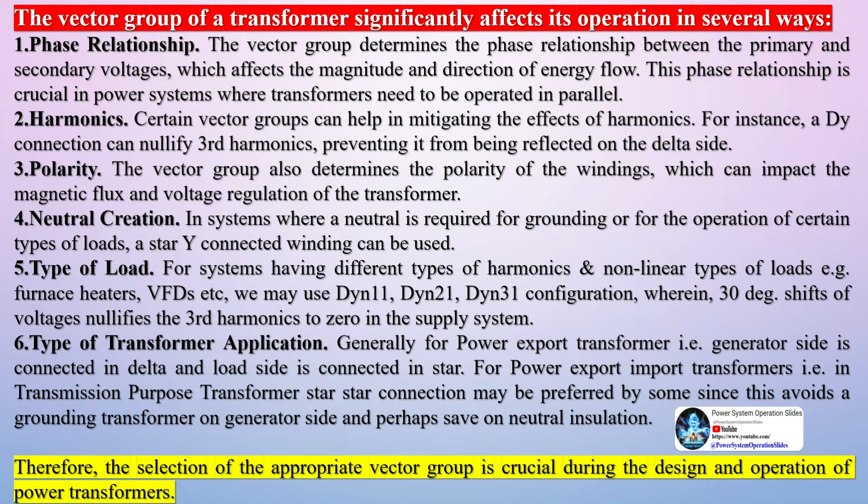To determine the vector group of an existing transformer, you can perform a vector group test. Here's a simplified procedure for a YND11 transformer. 1. Connect the neutral point of the star connected winding with Earth. 2. Join 1U of the high-voltage HV and 2W of the low-voltage LV together.